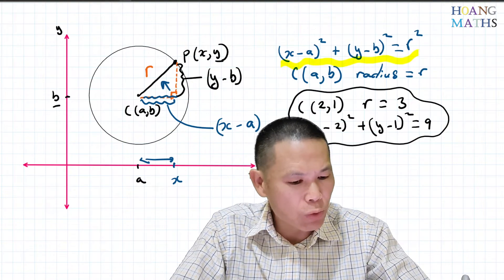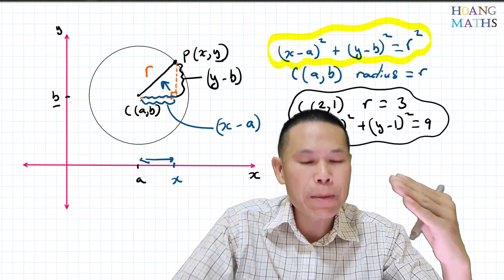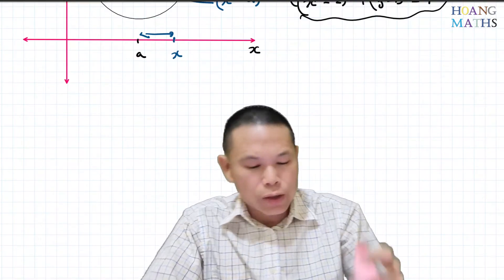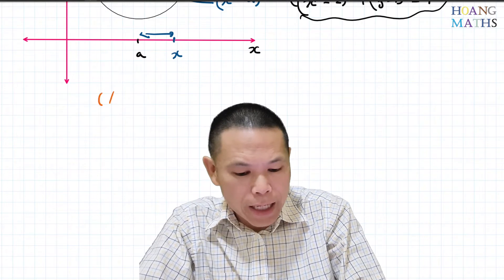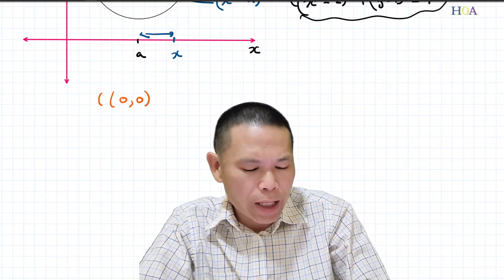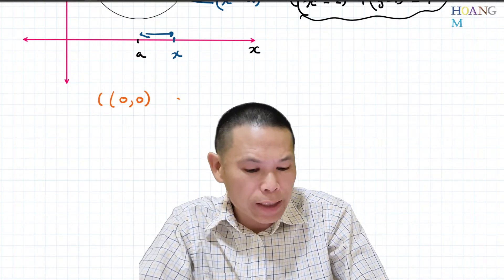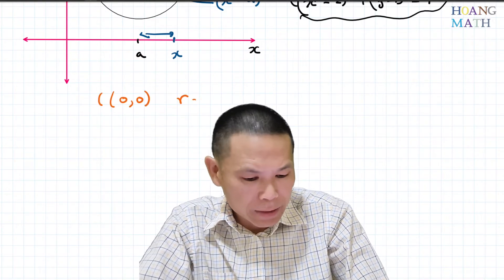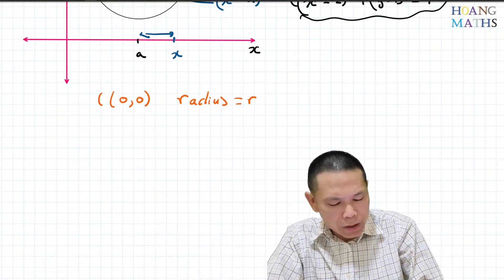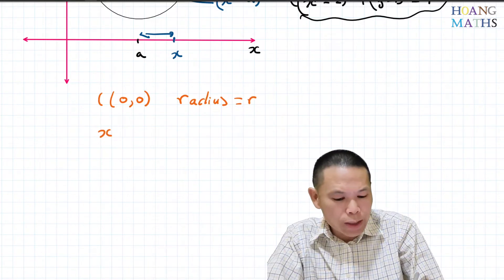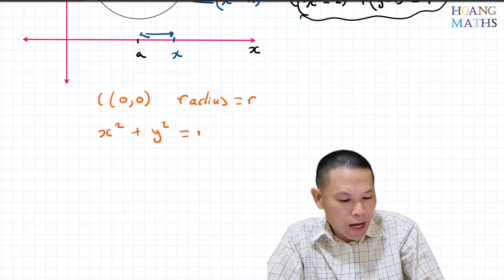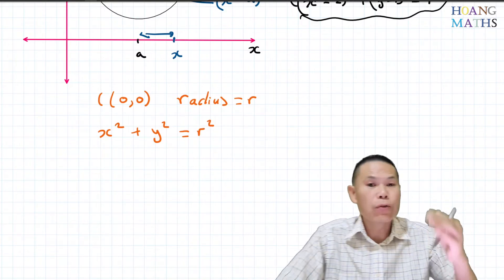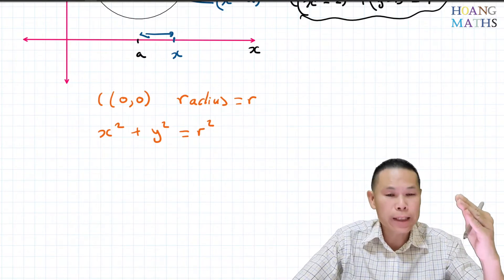Rather than just memorising this rule, let's step back. Remember, if we have a center at (0, 0) and radius r, the general rule is x squared plus y squared equals r squared — that's the original circle equation.